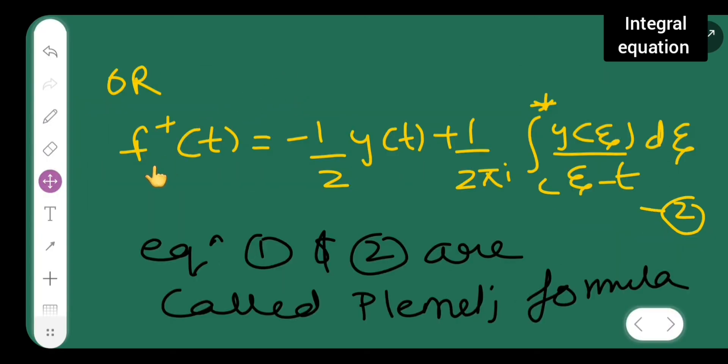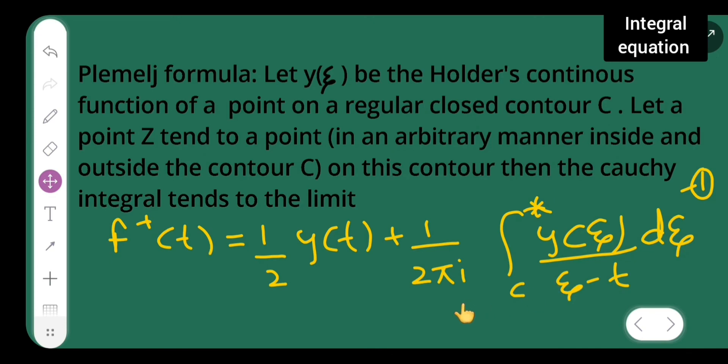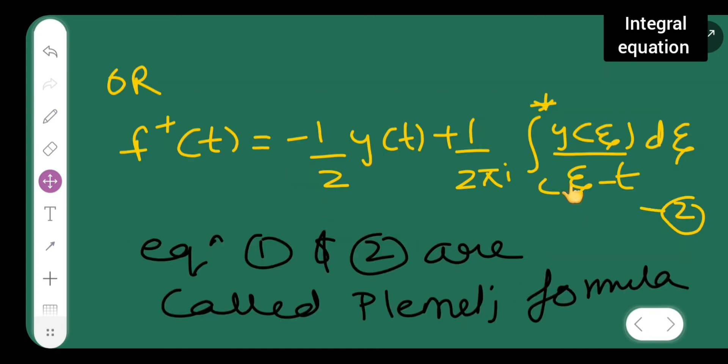On the next page, f⁻(t) = -1/2 y(t) + 1/(2πi) ∫_c* [y(ξ)/(ξ-t)]dξ. Take this as equation 2. Then equations 1 and 2 are called Plemelj formulas. This equation and this is known as Plemelj formula.